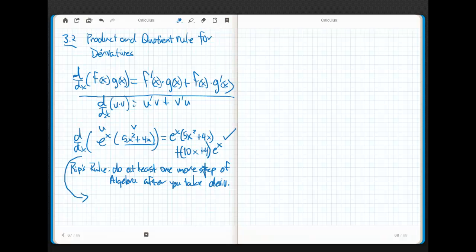If I were going to clean this up, I would notice that they both have an e^x. So I would factor out an e^x. And I would turn this thing into 5x^2 + 4x + 10x + 4. And then I would look and say, oh, my spidey sense is tingling. I have two terms that I can combine there. So I could write this as e^x times (5x^2 + 14x + 4).